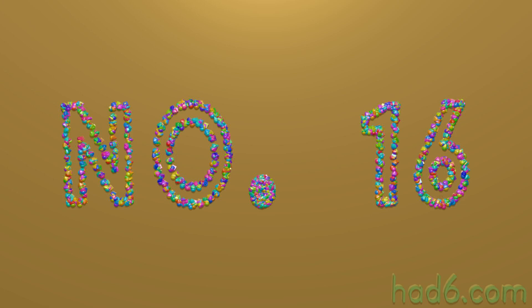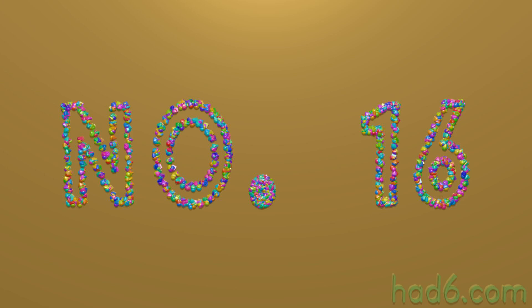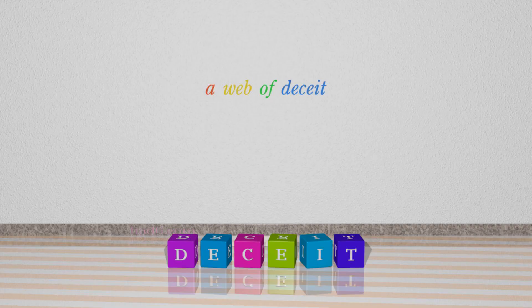Number 16: Deceit. Which means: The action or practice of deceiving someone by concealing or misrepresenting the truth. For example: A web of deceit.